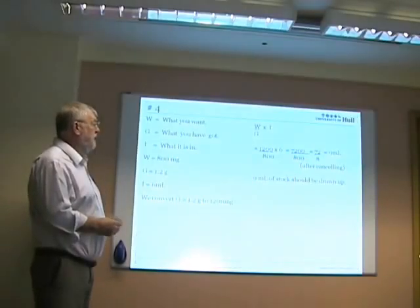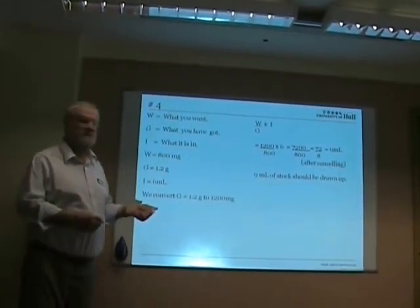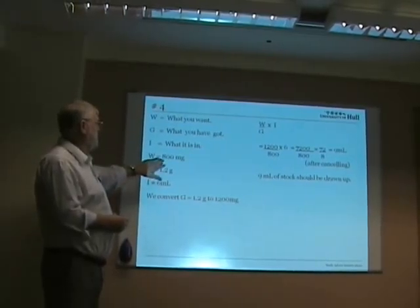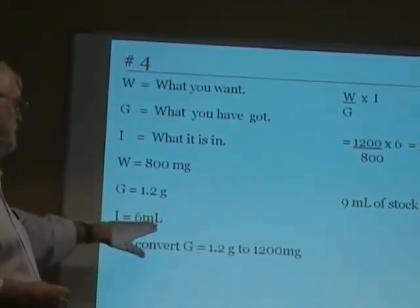Our fourth slide is again like the last one, where we have want and got in different units. Here, a patient is prescribed 800 mg of a drug. We have 1.2 g in 6 mL.